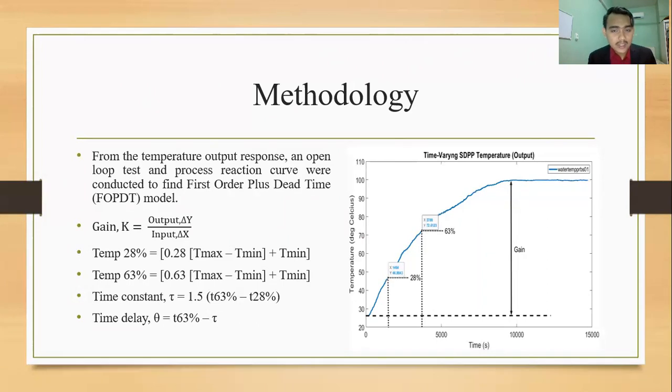So as you can see on the right side, this is the example of process reaction curve, where we need to locate the value of 28% and 63%. So from the location, we will find the value of X and Y. So for the value of X is the time and for the value of Y is the temperature.